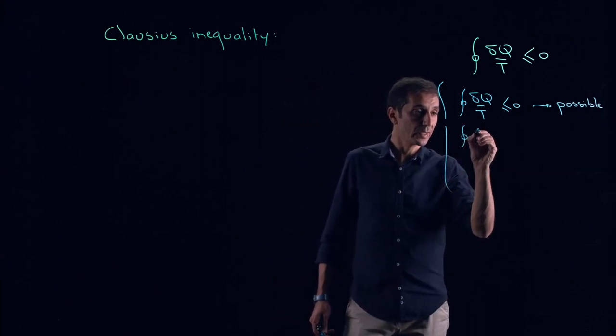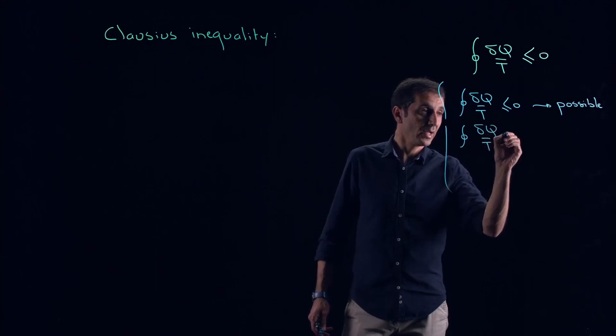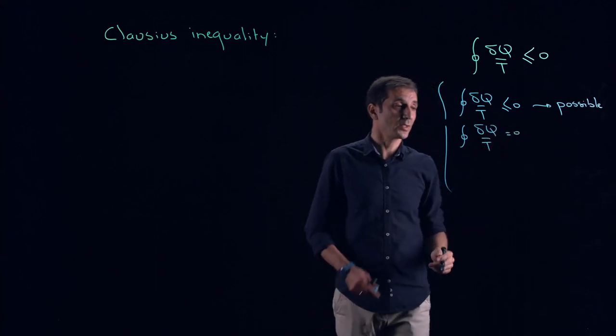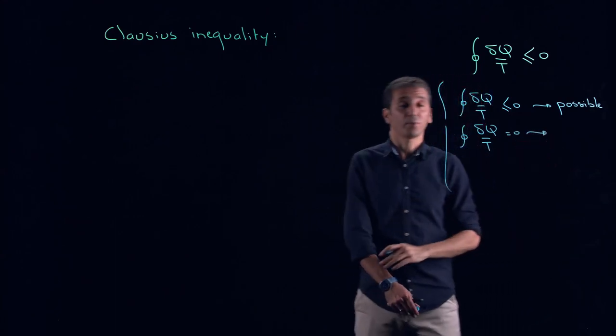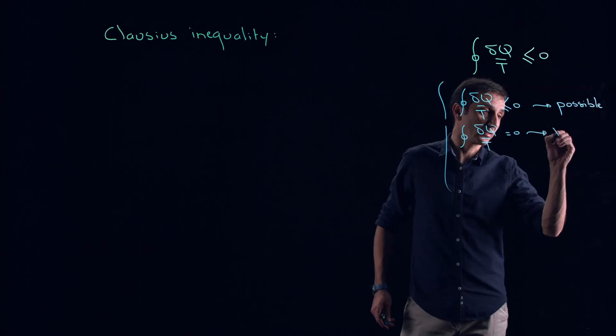If you calculated delta Q over T and you found this is equal exactly to zero, well, it's cool because it's more than possible. You designed a reversible cycle.